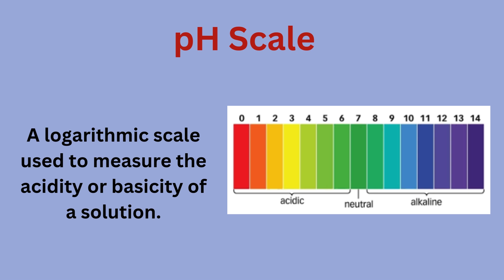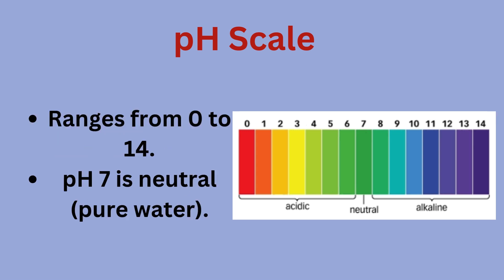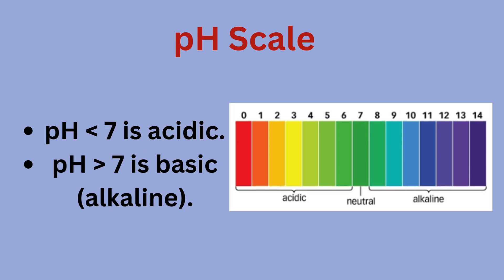pH Scale: a logarithmic scale used to measure the acidity or basicity of a solution. It ranges from 0 to 14. pH 7 is neutral, pure water. Below pH 7 is acidic; above pH 7 is basic, or alkaline.